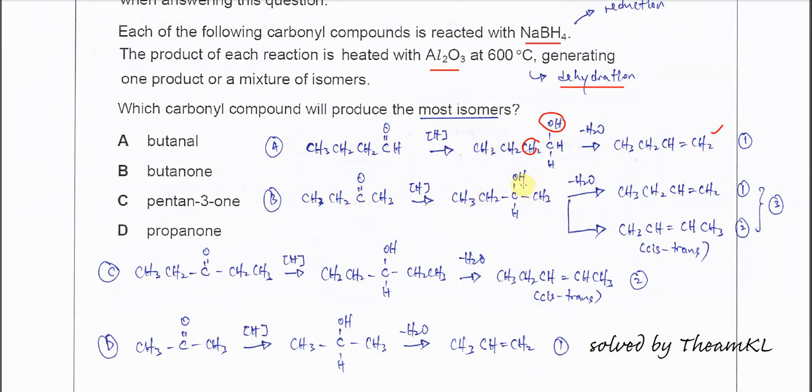Butan-2-ol, the OH will remove with this H to form the first isomer, this one. And this OH also can remove with this H, then it will form this isomer.